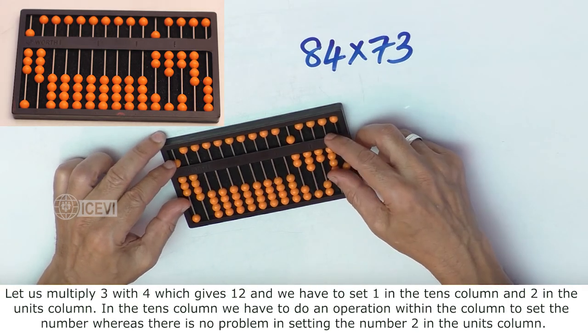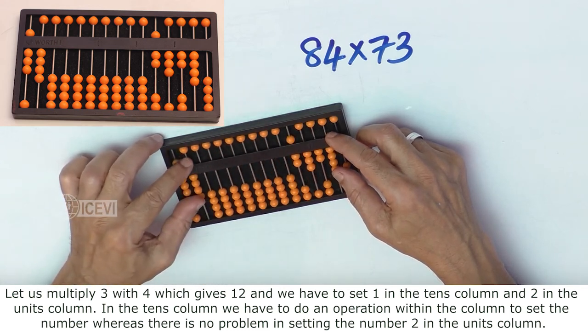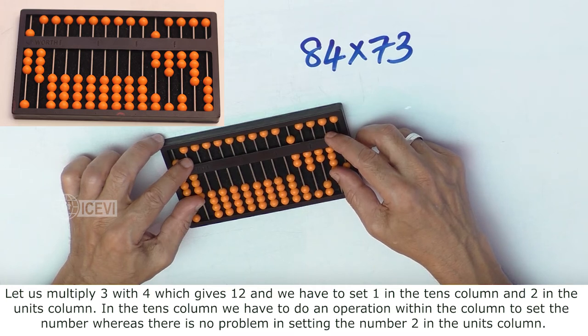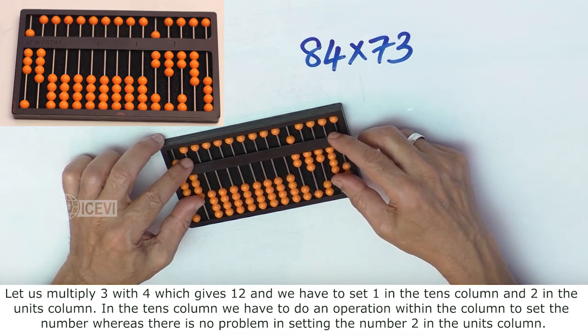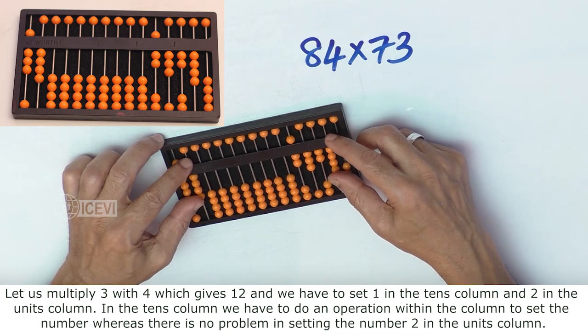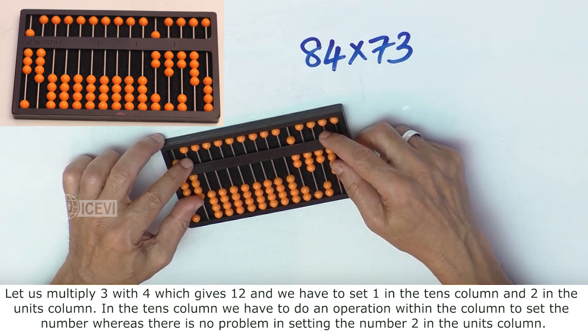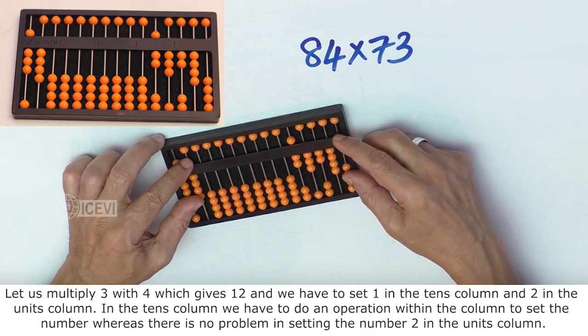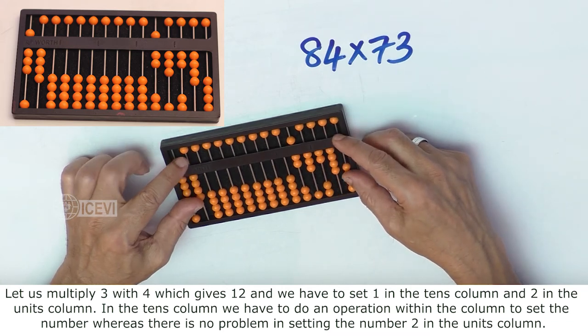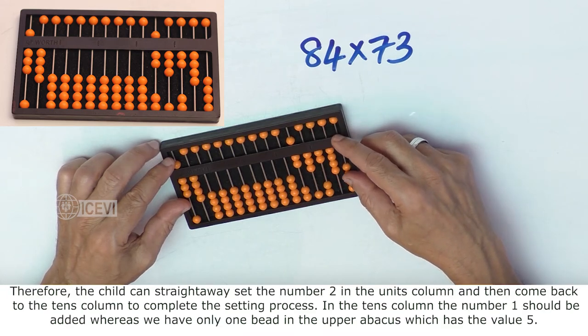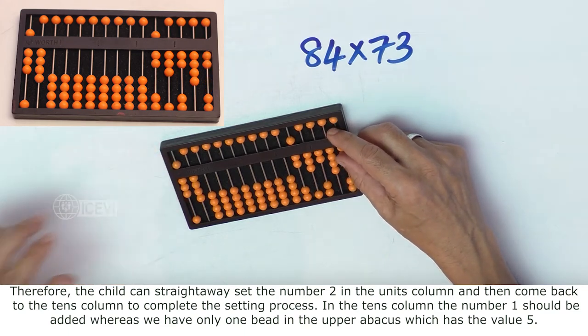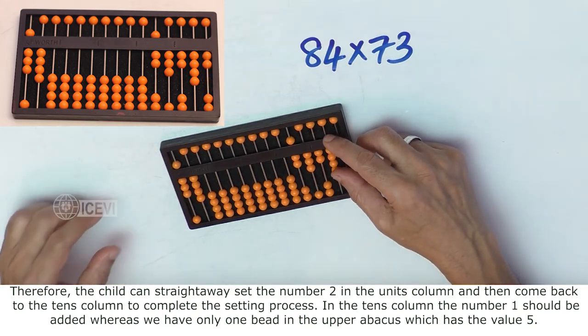Let us multiply 3 with 4 which gives 12, and we have to set 1 in the 10th column and 2 in the units column. In the 10th column we have to do an operation within the column to set the number 2, whereas there is no problem in setting the number 2 in the units column. Therefore the child can straight away set the number 2 in the units column and then come back to the 10th column to complete the setting process.